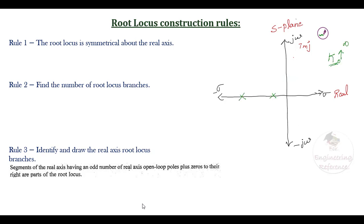If two poles are on the real axis and one pole moves in one direction while the other moves toward it, they meet at a breakaway point. One pole then moves upward and, due to symmetry about the real axis, the other pole moves symmetrically. That is the first rule: the root locus is symmetrical about the real axis.